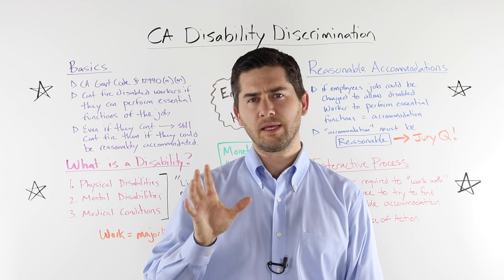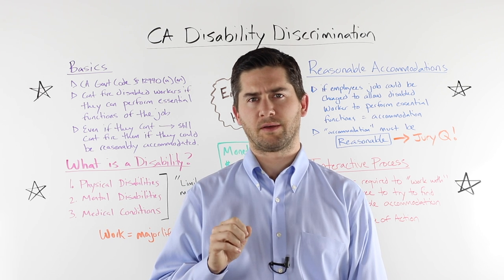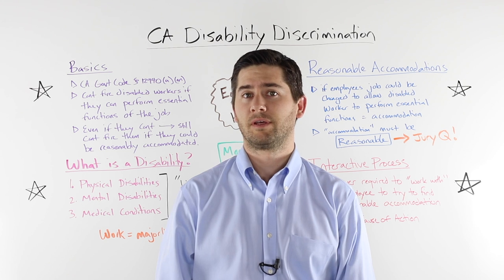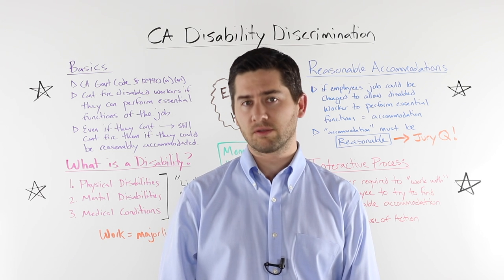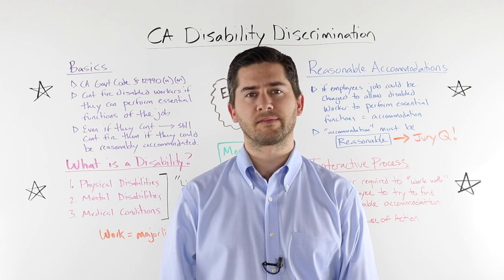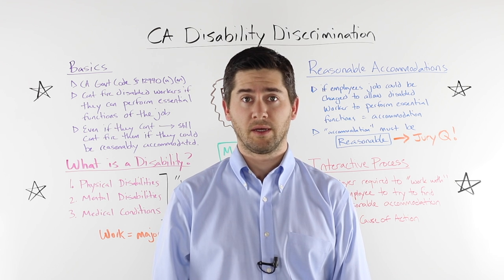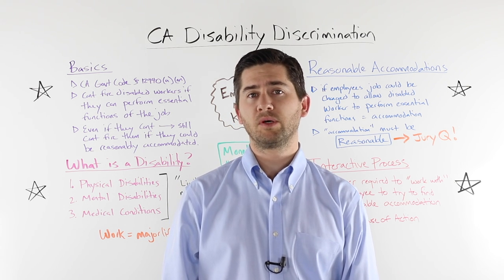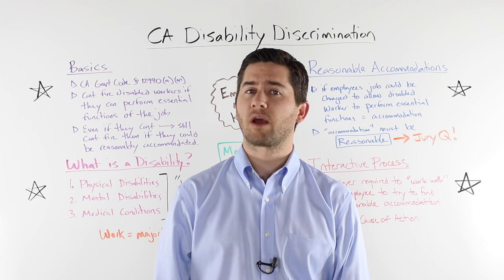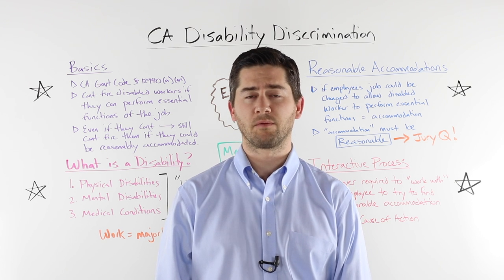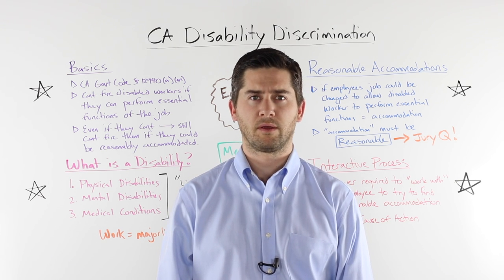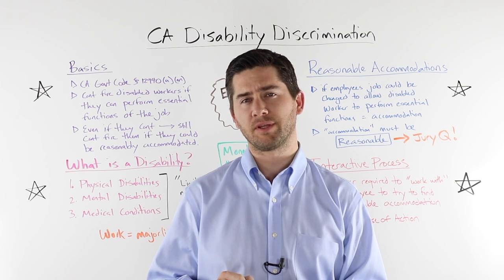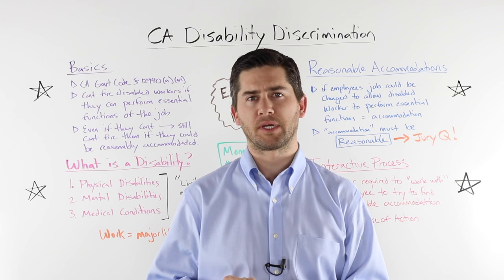Everybody knows that it is illegal to terminate somebody because of their race or their religion — that's discrimination. In California, it is also unlawful to discriminate against somebody because of their disability, so long as they can perform the job. Unfortunately, disability discrimination has become one of the most common types of employment lawsuits in California. This video is going to describe exactly what disability discrimination is and what you can do to protect yourself.